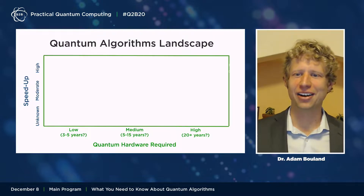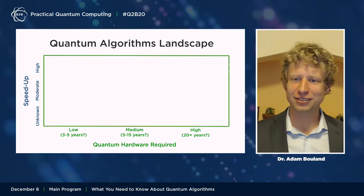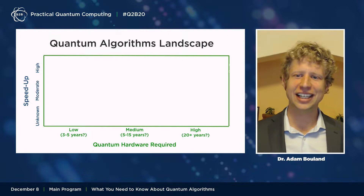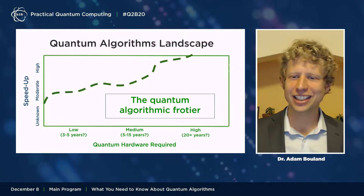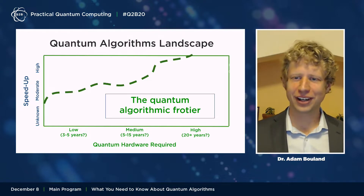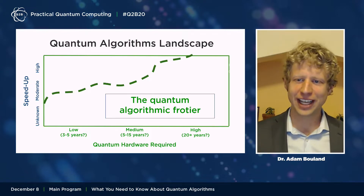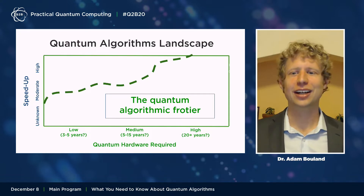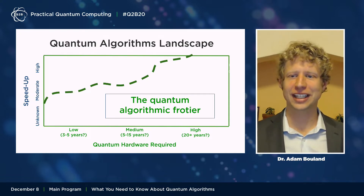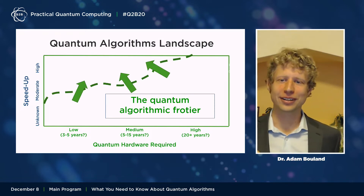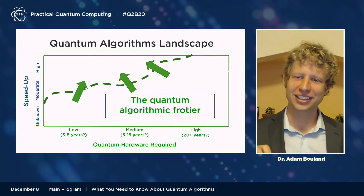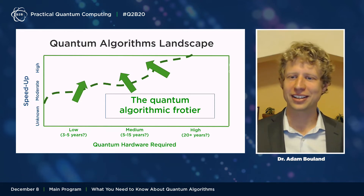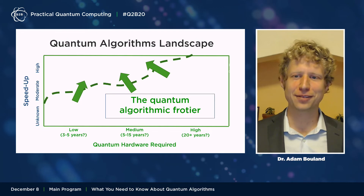To wrap up, I've shown you the quantum algorithms landscape for three different application areas — optimization, chemistry, and machine learning. In each one, there's a quantum algorithmic frontier that controls how much speedup we can achieve for these applications and when that speedup will be relevant, as controlled by the hardware requirements of those algorithms. The goal in quantum algorithms research going forward should be to push this frontier further, in order to bring forward the date at which these algorithms provide practical impact in industry. Thank you very much.